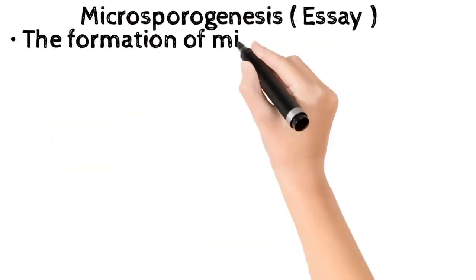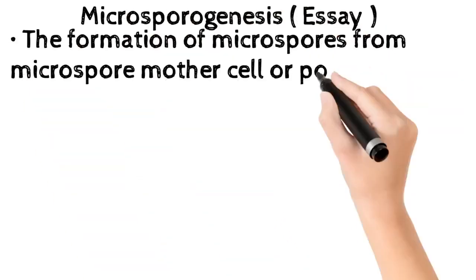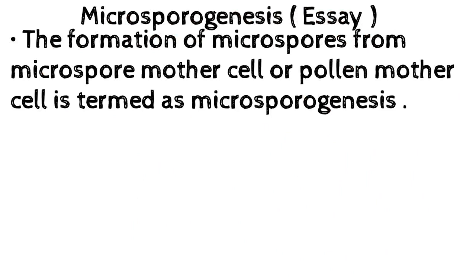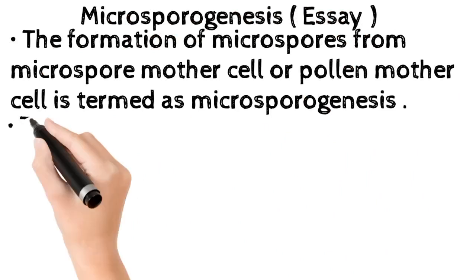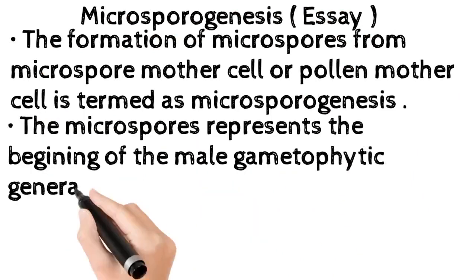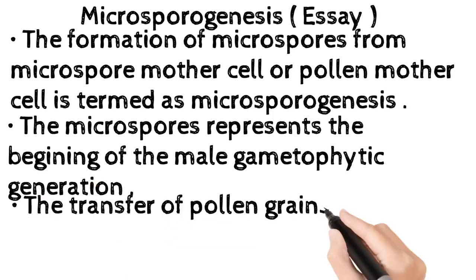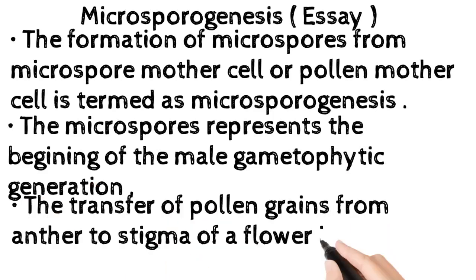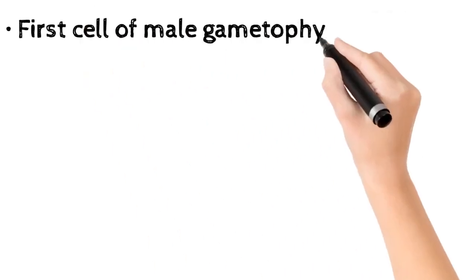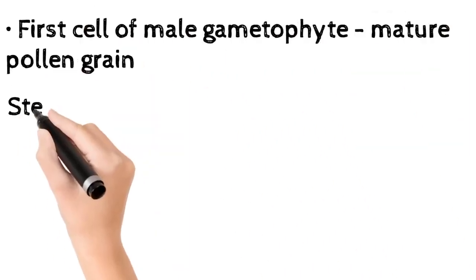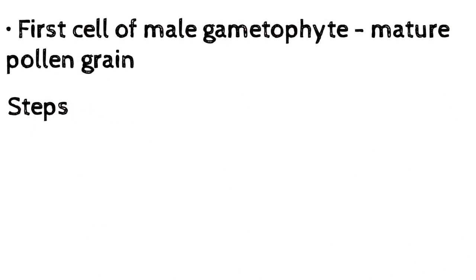Microsporogenesis essay: the formation of microspores from microspore mother cell or pollen mother cell is termed as microsporogenesis. The microspores represent the beginning of the male gametophytic generation. The transfer of pollen grains from anther to stigma of a flower is called pollination. The first cell of the male gametophyte is the mature pollen grain.